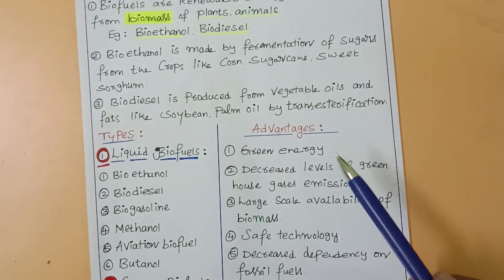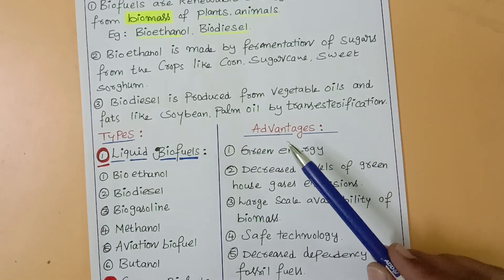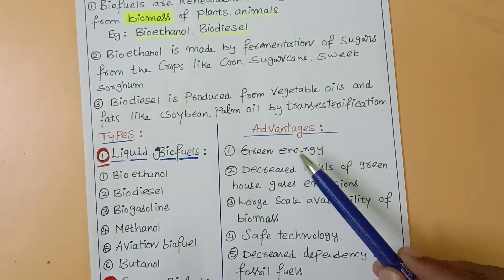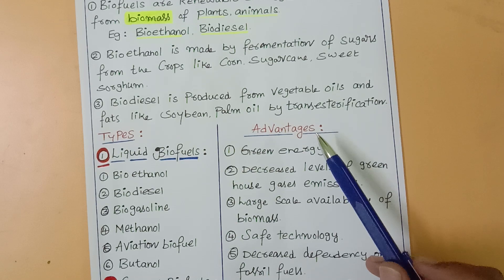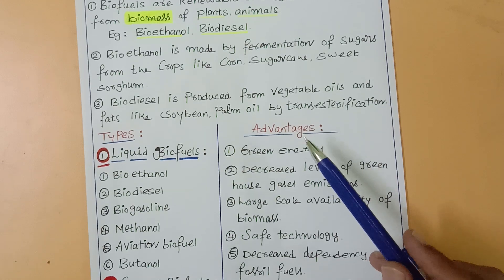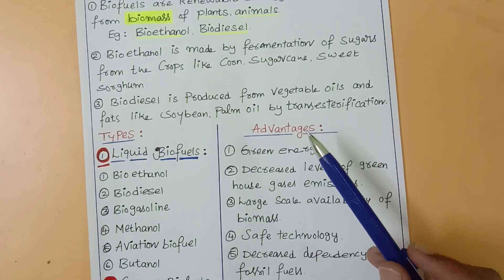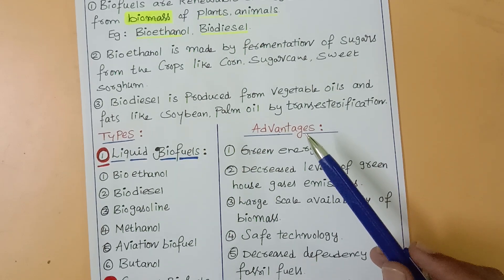In daily life, common sources include sunflower oil, palm oil, and animal fats such as lard, fish oil, chicken oil, and duck oil.